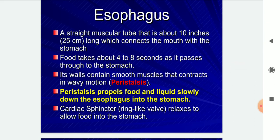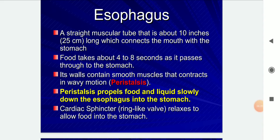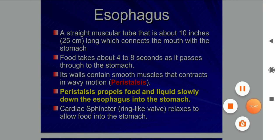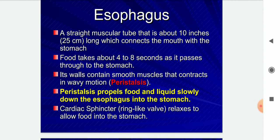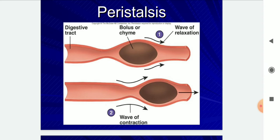The oesophagus is a straight muscular tube about 10 inches long that connects the mouth with the stomach. Food takes about four to eight seconds to pass through it. The oesophagus contains smooth muscles that contract; peristalsis propels food and liquid down into the stomach — a wave of contraction followed by a wave of relaxation moves the bolus through the digestive tract.